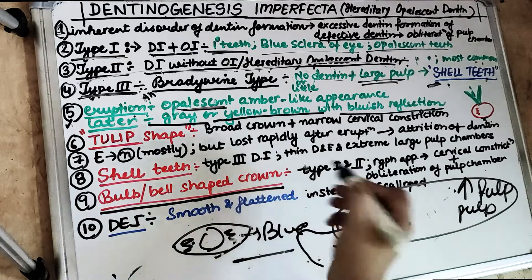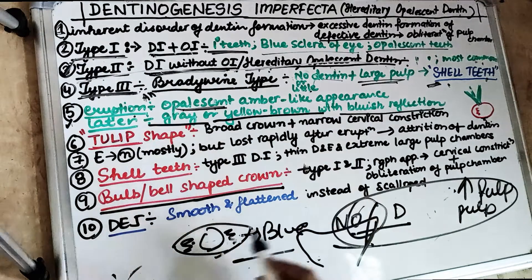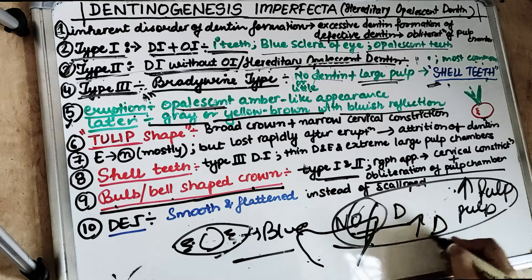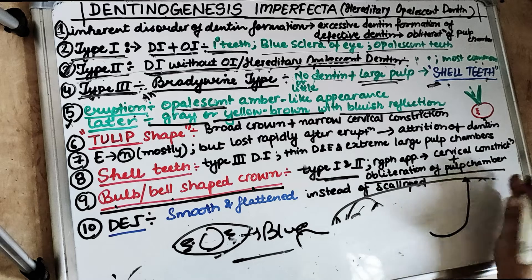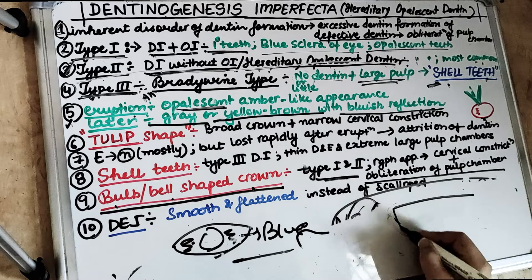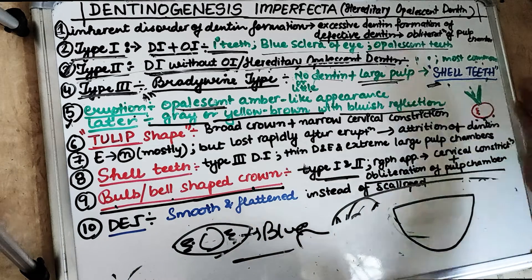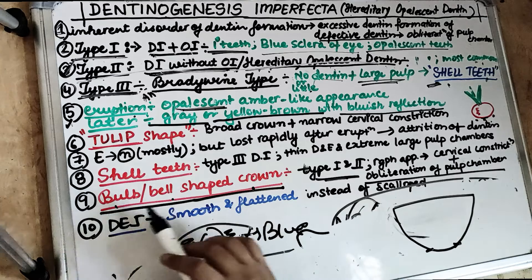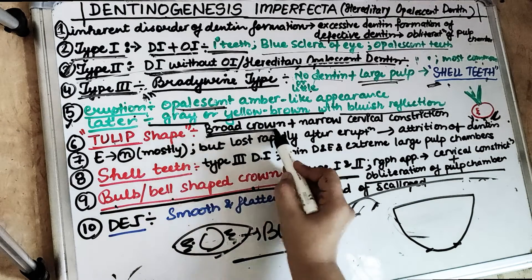In type 1 and type 2, there is a bulb or bell-shaped crown. This is due to the obliteration of the pulp chamber and increased dentine causing a cervical constriction. The tooth has a broad crown with a narrow cervical constriction, giving it a tulip shape. So the tooth looks bulbous from the occlusal view, with a broad crown and narrow constriction at the cervix — this is the bulb, bell, or tulip-shaped appearance.